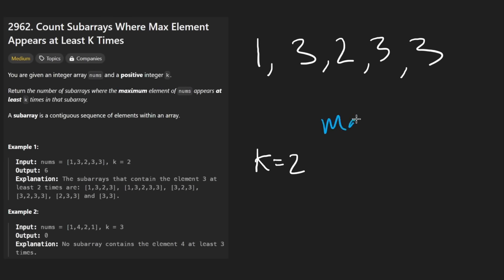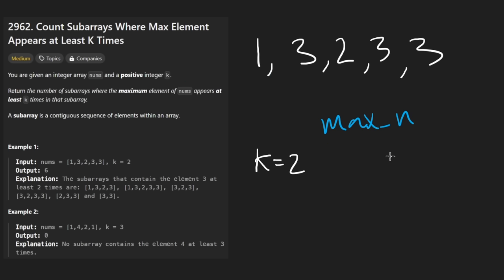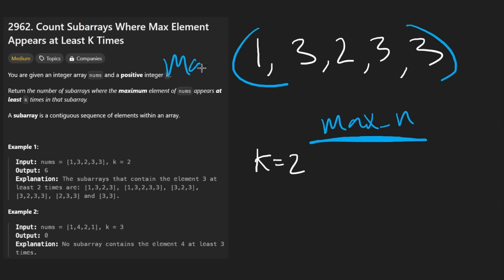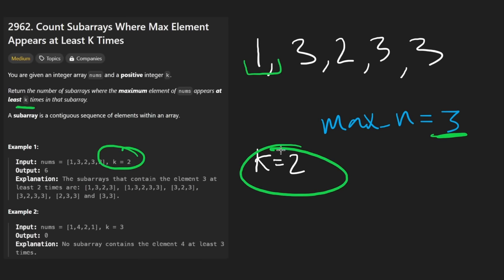I was dynamically keeping track of what the maximum number is as our subarray changes, but the problem is actually easier than that. Don't overcomplicate it — the maximum number is not going to change. We just want the global max of nums, which we can find by running max on the input array. In this case it's always going to be three, and the problem is asking how many subarrays have three appearing at least two times — that's what k is in this example.